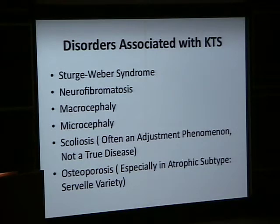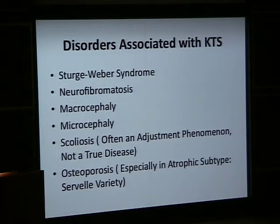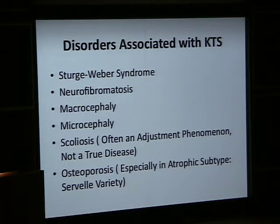When you read the literature, they talk about scoliosis associated with KTS — but that is not actually the case. The scoliosis seen in KTS is not a true disease. It is really an adjustment: when it becomes difficult to move the limb, there is a curvature as a compensatory mechanism. That curvature is not a permanent defined scoliosis, and its prevalence in KTS patients is actually just as common as in the rest of the population.